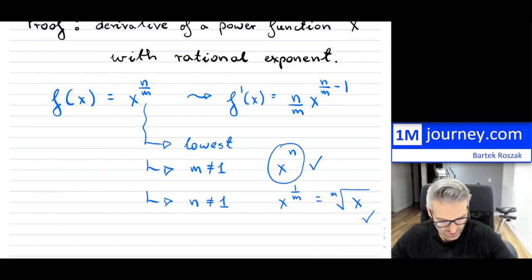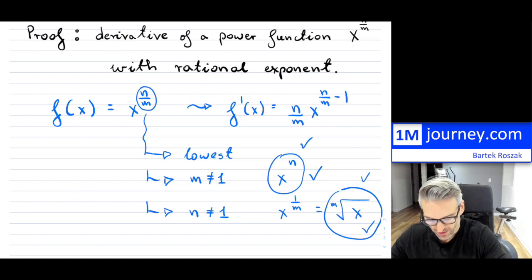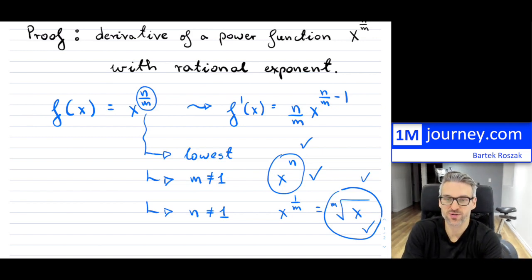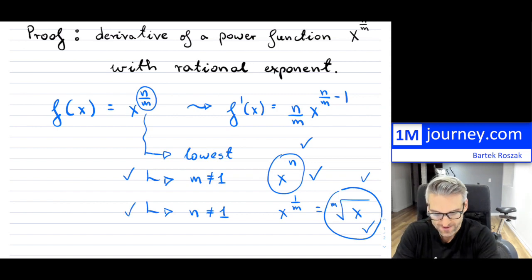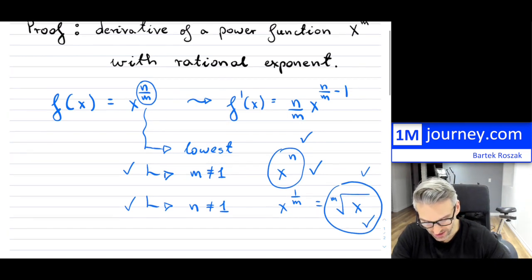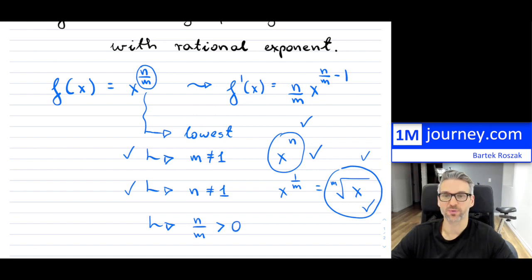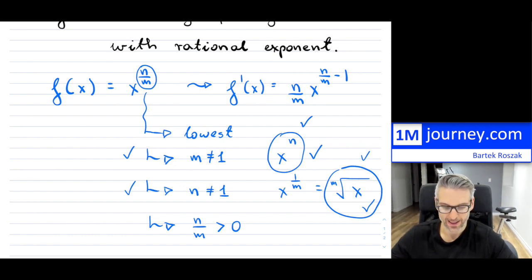These two cases I'm going to exclude. We're assuming n/m is some fraction in lowest terms, m is not equal to 1, and n is not equal to 1. I'll also assume that n/m is greater than 0 — a positive number. I'll talk about the negative case at the end of the video.